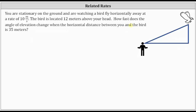Let's take a look at the diagram shown on the right. The angle of elevation is the angle formed from your line of sight up to the bird — this angle here, which we will call angle theta. And because the bird is flying horizontally away at a rate of 10 meters per second, we know the bird is flying in this direction here. So if we label this horizontal distance x, x is increasing at a rate of 10 meters per second, which we indicate as dx/dt equals 10 meters per second.